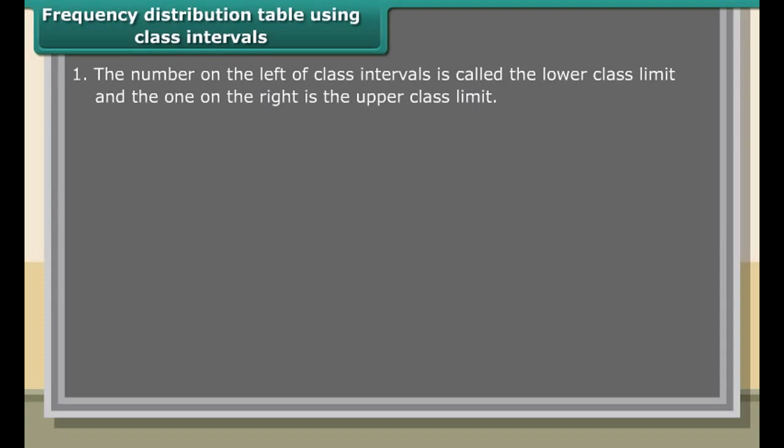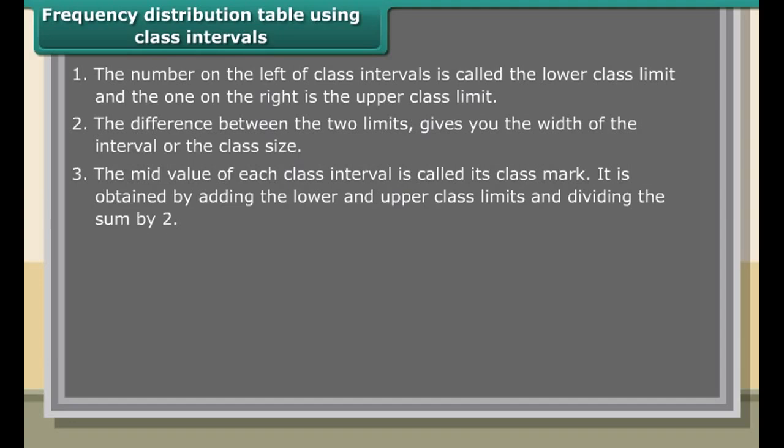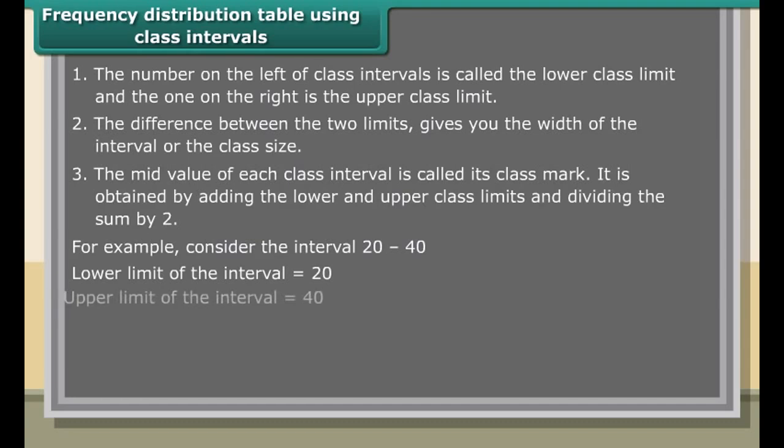The number of class intervals should not be too many. At the same time, they should not be too few in number. There could be from 5 to about 20 class intervals. Based on the above two factors, you will have to choose the width of the class intervals. You should choose this width with great care. It should not be so wide that the significance of the data is lost, nor should it be so narrow that the number of intervals is too many. Only you can decide the optimum size of the interval. Let us take the width as 20.